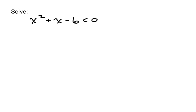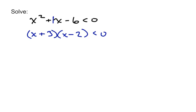For this expression, x squared plus x minus 6 is less than 0. It's not factored yet, so we can't really create our sign chart — the very first step is to factor it. x squared factors into x and x, 6 factors into 3 and 2, and we need a plus 3 minus 2 to get minus 1. Now create our sign chart: it's a number line with two critical values, the first at negative 3 and the next at 2. Those are the spots that make the expression equal to 0.